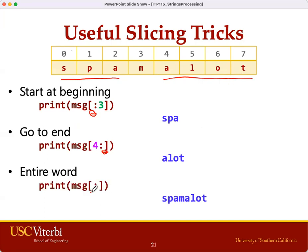We can also skip both the start and the end position. In this case, Python will substitute 0 as the default value for the first index and length as the second default value. This is going to give us the entire string.